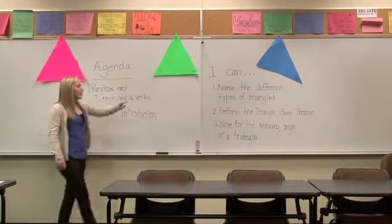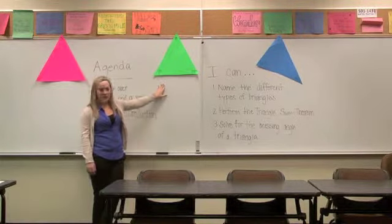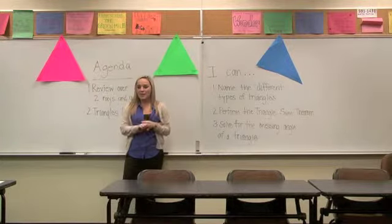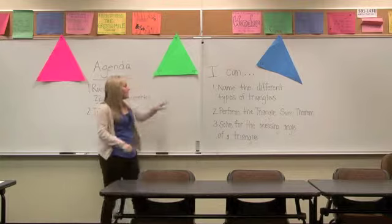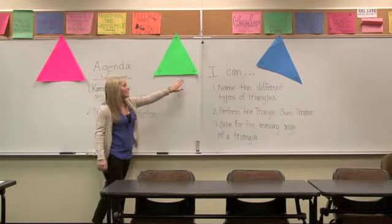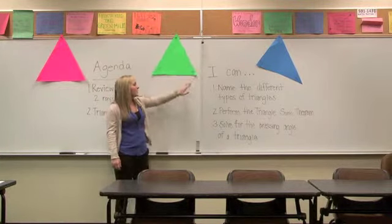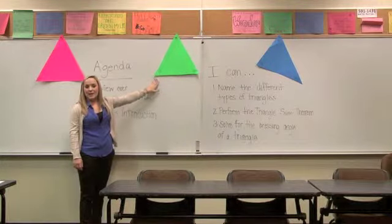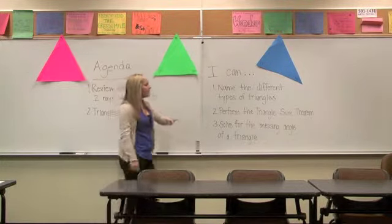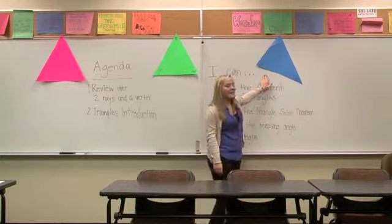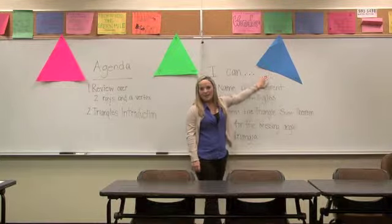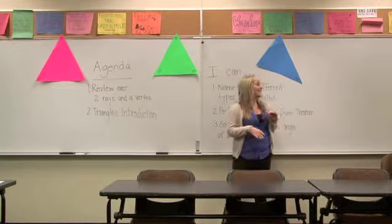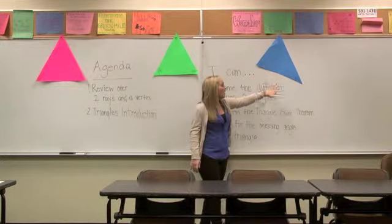Our next triangle over here is called an isosceles triangle. With isosceles triangles, two sides and two angles are equal. As you can see here, two of the angles are equal to 55 degrees while this one is not — that's what makes it an isosceles triangle. And this last one over here is called a scalene triangle. Kind of a funny word, but with scalene triangles, none of the angles and none of the sides are equal, so they're all different.